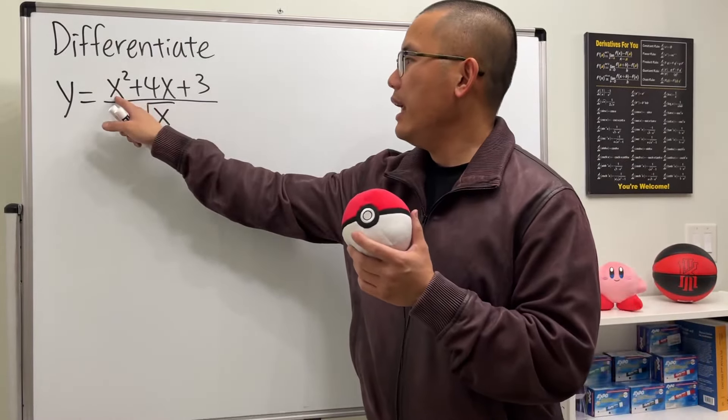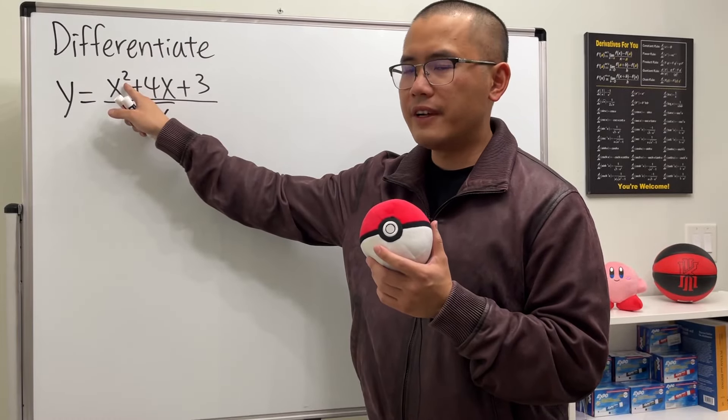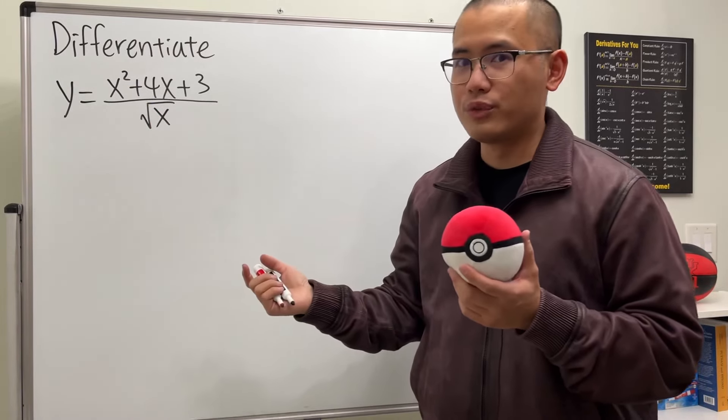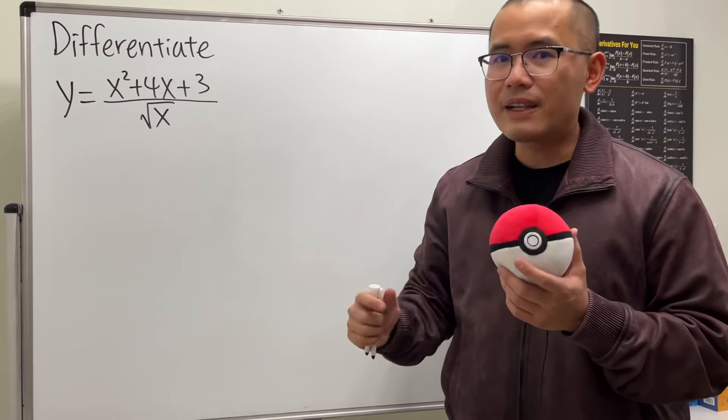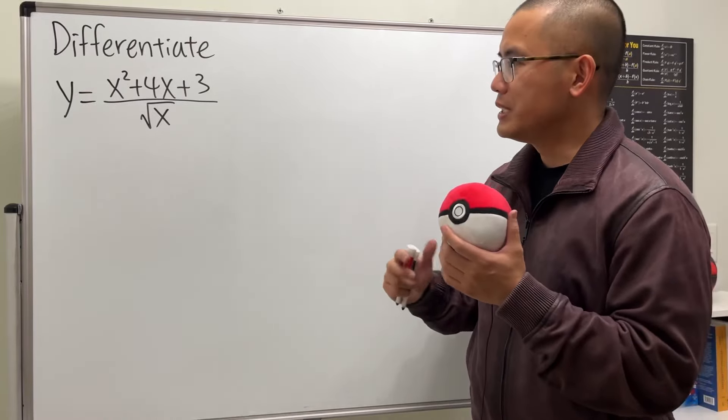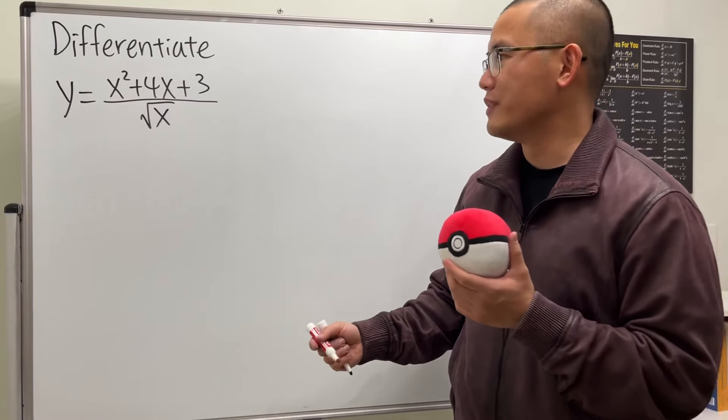Because you see, x squared right here, it's actually affected by this right here, the square root of x on the bottom. In fact, we have to do algebra first to simplify the powers before we can use the power rule for the derivative.